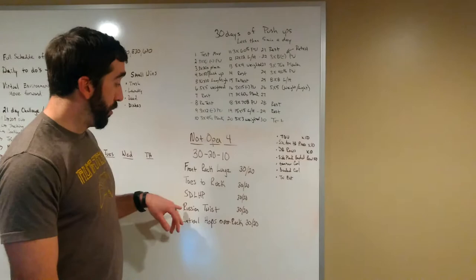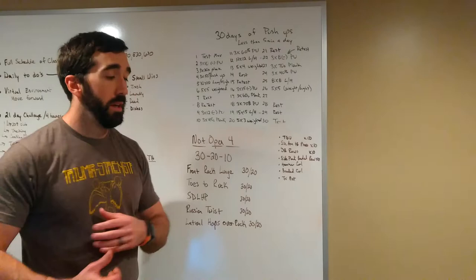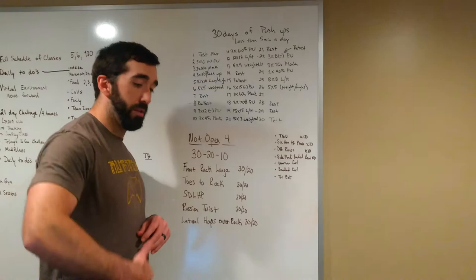Moving into Russian twist, so that's where we're sitting on the ground and we're twisting side to side, keeping the core nice and tight. And then lateral hops over your object, so having that bag or what have you on the ground, jumping over one, jumping back for a lateral hop as opposed to a forward and back kind of hop over that object.